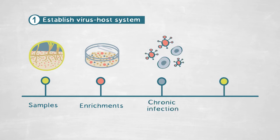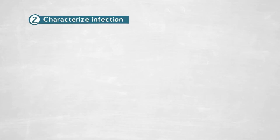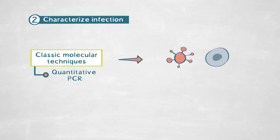Then we had to develop a method to actually detect these chronic infections in the samples, because all of the traditional culturing methods are designed to detect only lytic infections — which means that the host is being killed. We combined classic molecular techniques such as quantitative PCR, which allows us to assess how much viral protein is being produced and what is the outcome for the host and the virus in this chronic infection.